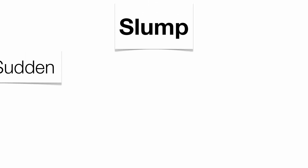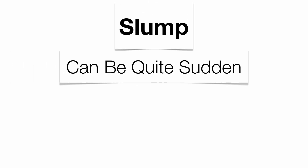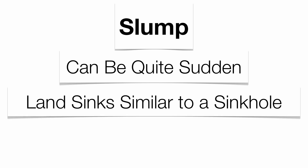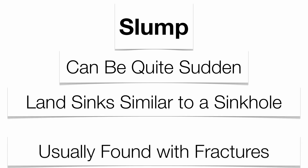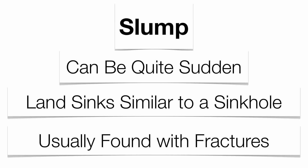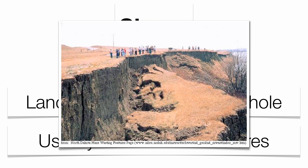Slumps can be quite sudden at times, acting somewhat like a sinkhole without the carbonation. They usually occur in areas where the rock underneath the soil has become broken, and the rock can no longer support the overlying weight of the soil, so it slumps downward. You can see here that this slump is quite a large one, with the entire cliff face actually slumping downward.